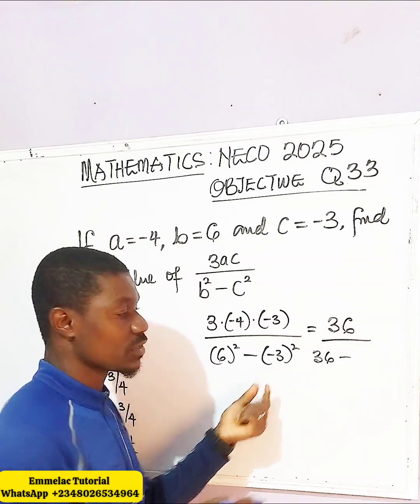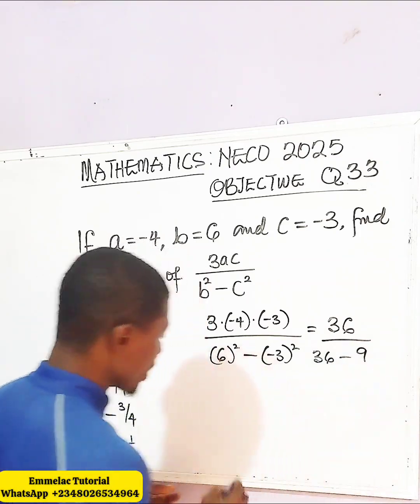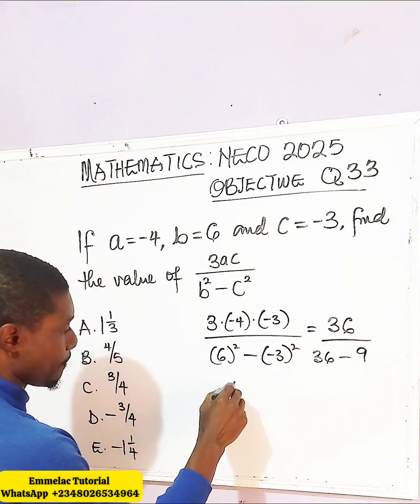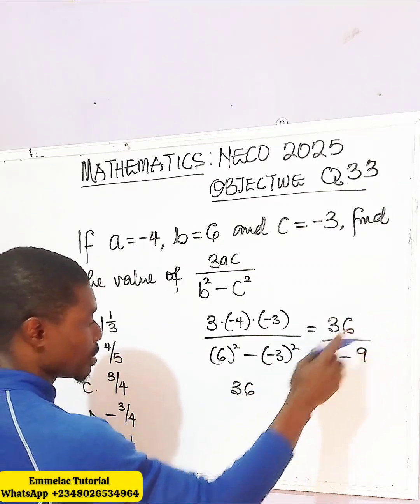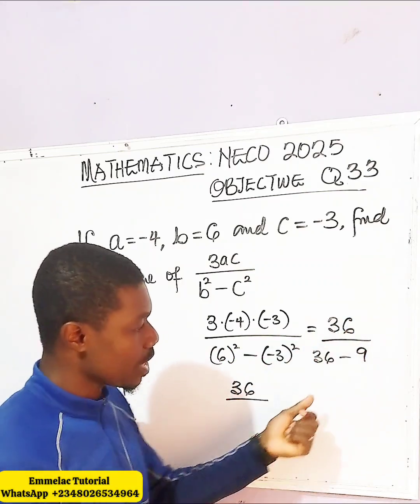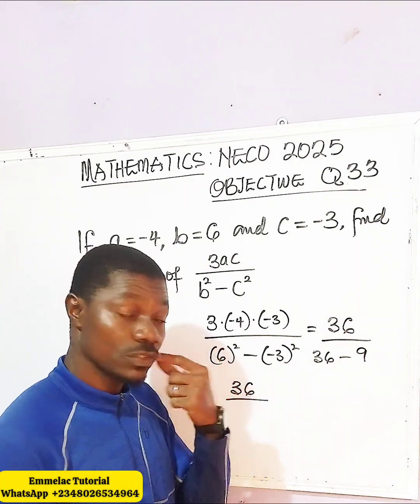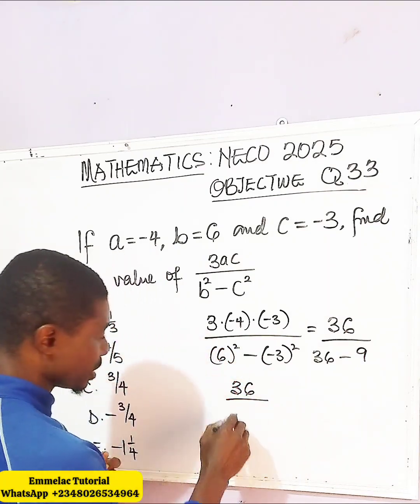Negative 3 squared will give us 9. So we are left with 36, which is the numerator, all over — this will give us 27.